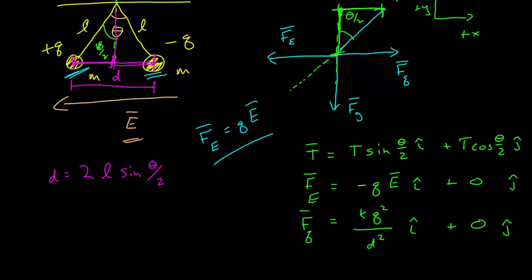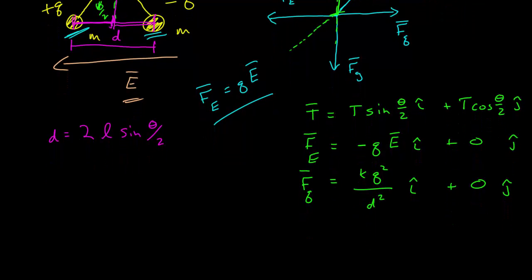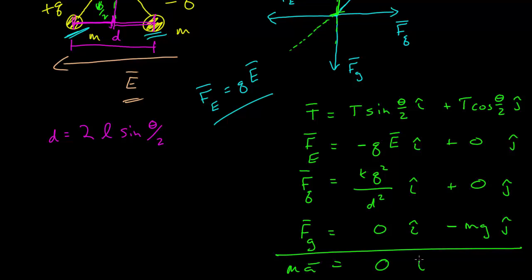And then next, I'll give myself a little more space, then the final force is due to gravity, which is zero x component and negative mg y. And the sum of all those, which is equal to ma, zero i hat plus zero j hat, nothing is moving.